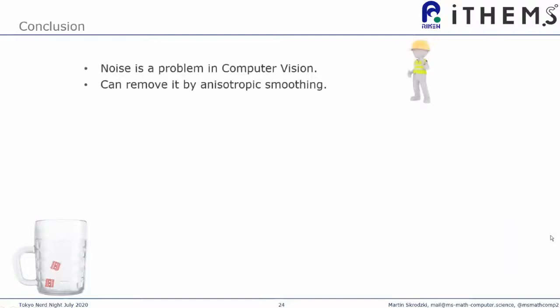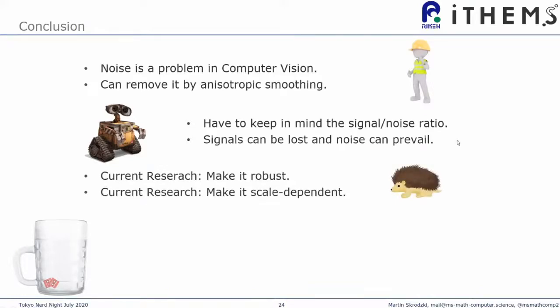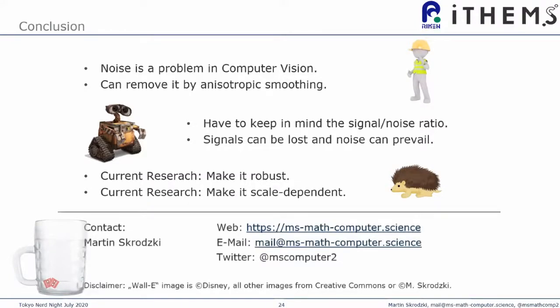So let me conclude here. This noisy behavior is a problem in computer vision. We can remove it by anisotropic smoothing. This is basically the algorithm I've talked you through. We have to keep in mind the signal to noise ratio. If we know what we're looking for, we can smooth for it. But if we don't really know what we're looking for, we might smooth too much and we can lose actual signals or we smooth not enough and we do still see noise in our data. Current research is basically directed at making this more robust. So this noise signal to noise ratio problem is getting less severe and making it scale dependent so that even small levels of noise and also large levels of noise on the same object don't interfere with our algorithms. And with that, I would like to thank you so much. Here's some contact data if you want to spread this or learn more. And I'd like to thank you for your kind attention today.